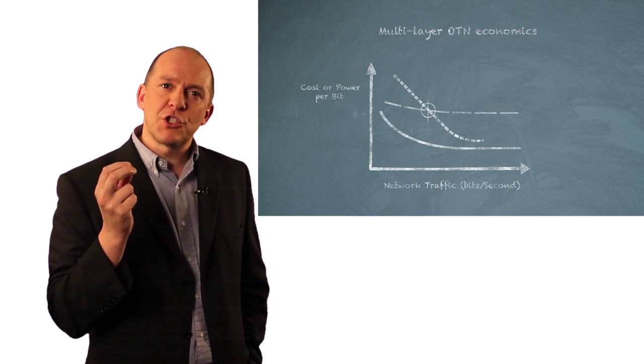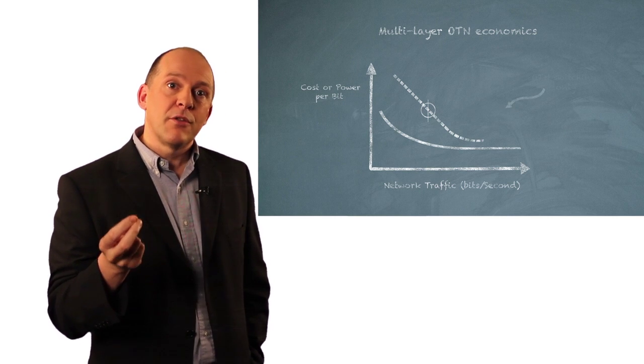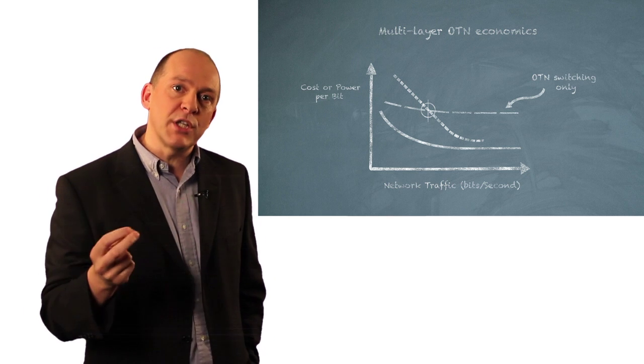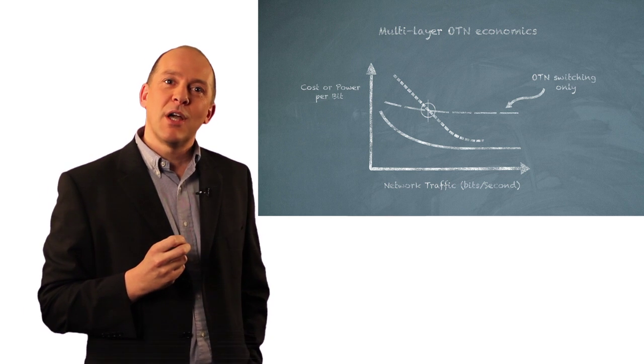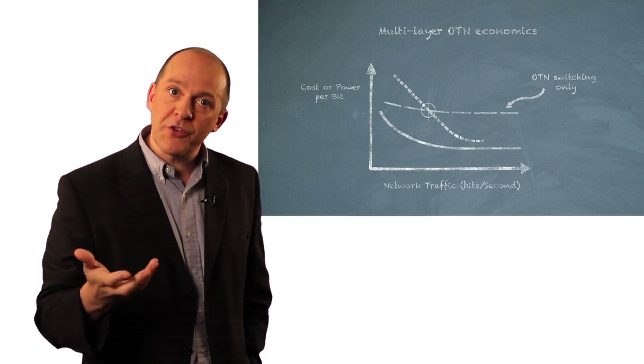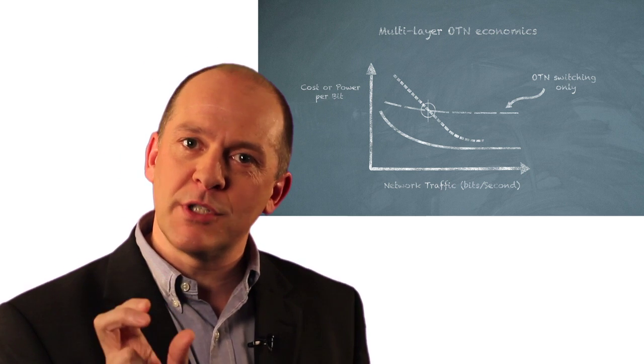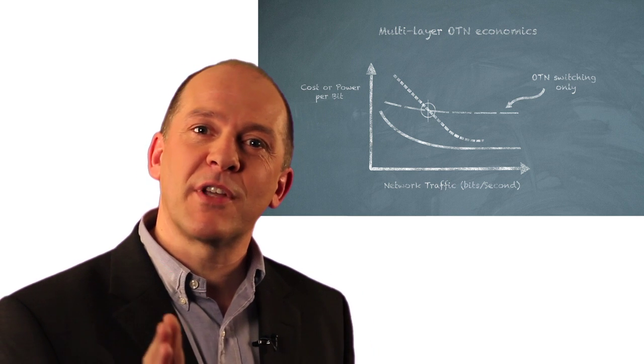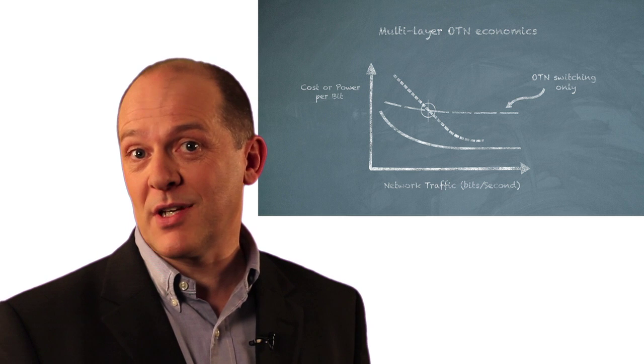What this chart actually shows are three lines. There's a horizontal line that's basically just an electrically switched OTN network. And you see that it's actually quite good for cost in terms of a cost per bit when the traffic is lightly loaded to the left-hand side of the chart. But it's not very good when the traffic is heavily loaded to the right-hand side of the chart.